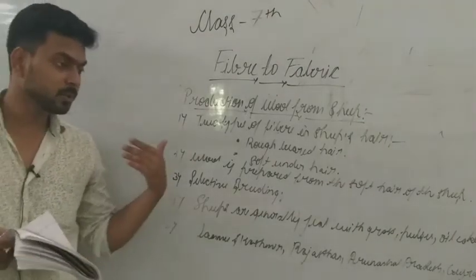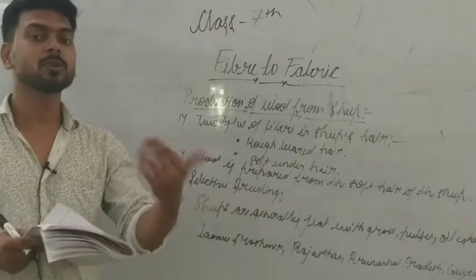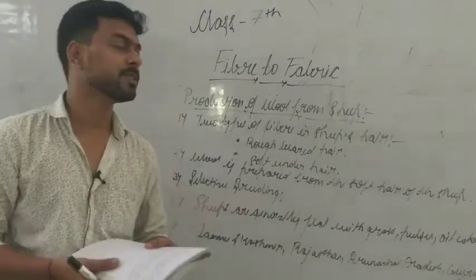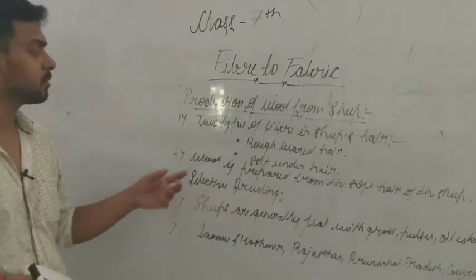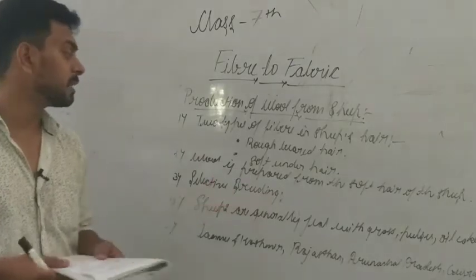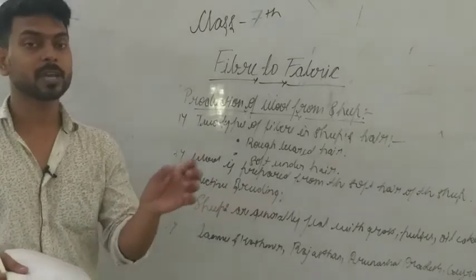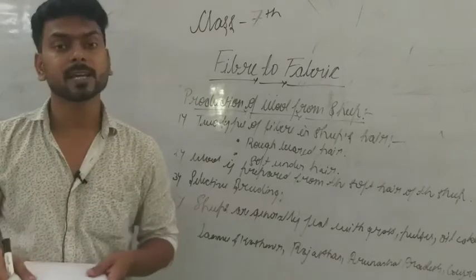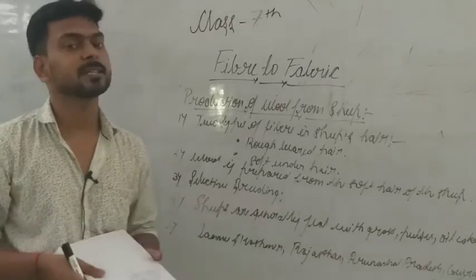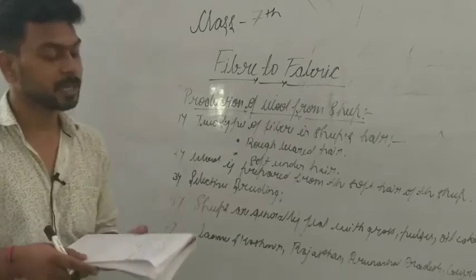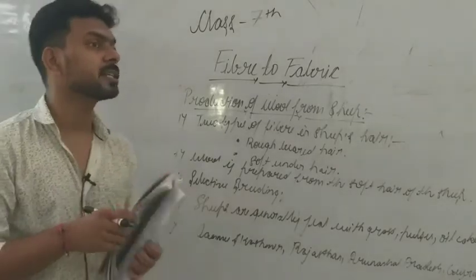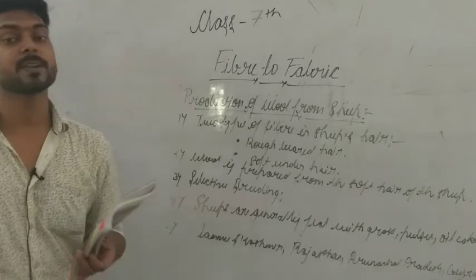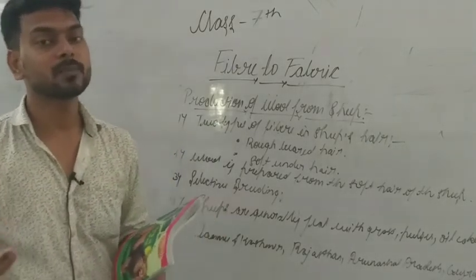So overall, we will continue this tomorrow in the next class. The hair on the sheep has two types: rough hair and soft hair. The wool we make comes from the soft under hair. Through selective breeding, we can get the best quality wool. Sheep are fed grass, pulses, oil cakes, etc., and are reared in different states of India for wool production.